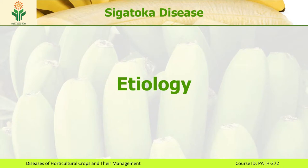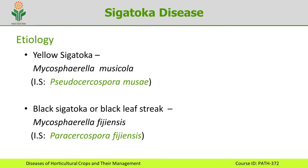This pathogen is an Ascomycetes fungus capable of inciting yellow Sigatoka and black Sigatoka. Yellow Sigatoka is caused by Mycosphaerella musicola — this is the perfect stage of the fungus — while the imperfect stage is known as Pseudocercospora musae. Black Sigatoka, also referred to as black leaf streak, is caused by Mycosphaerella fijiensis, with the imperfect or asexual stage known as Pseudocercospora fijiensis.